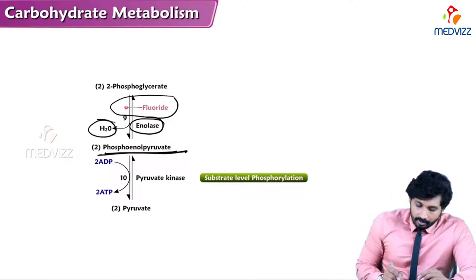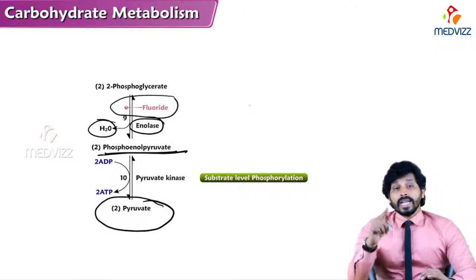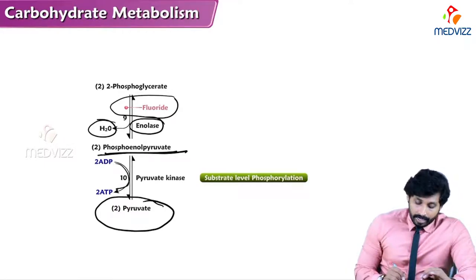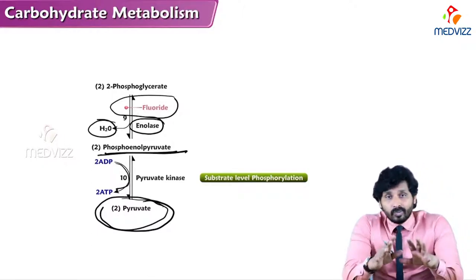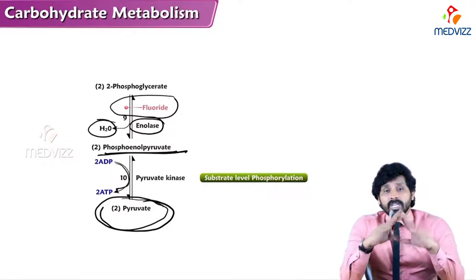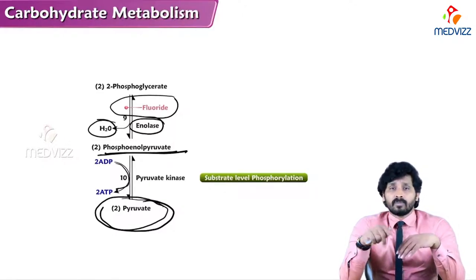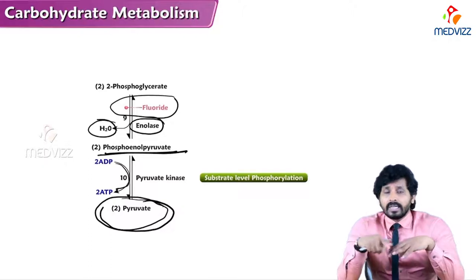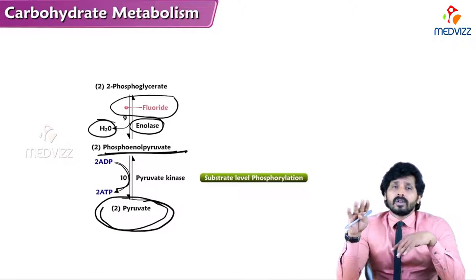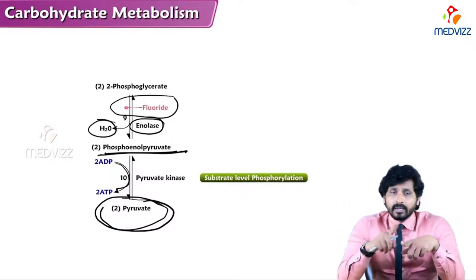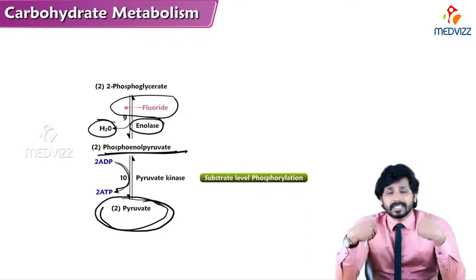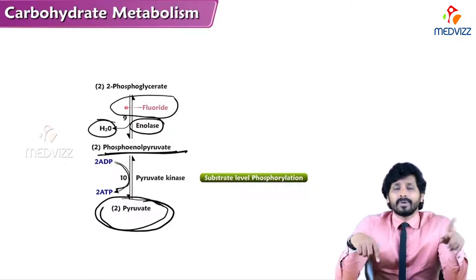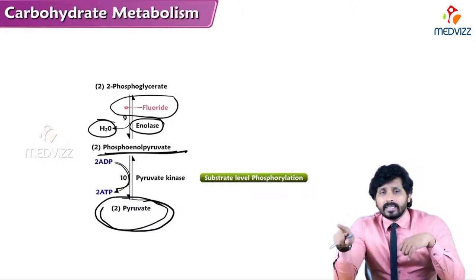Phosphoenolpyruvate is converted to the final product pyruvate — the phosphate group is transferred to ADP to form ATP. Reactions where ADP is converted to ATP in this way are examples of substrate-level phosphorylation. In our body, ATPs are produced by two mechanisms: oxidative phosphorylation, which uses the electron transport chain with oxygen, and substrate-level phosphorylation, which produces ATP at the substrate level without ETC.